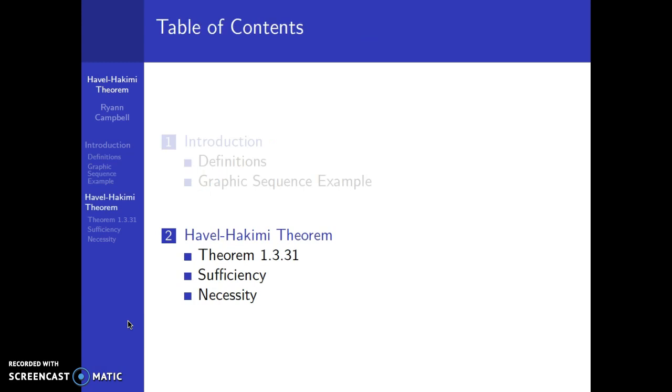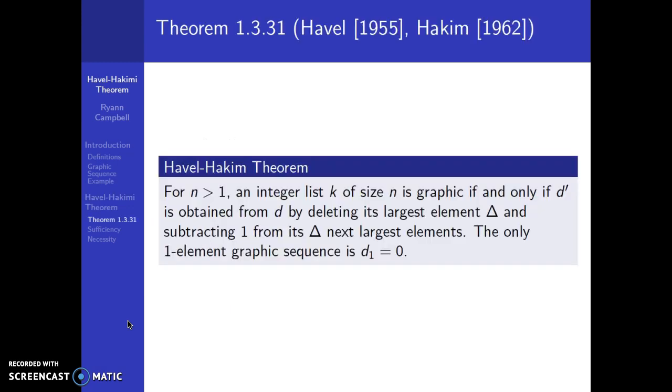Now that we have gone through the definitions and a small example, we are going to learn about the Havel-Hakimi theorem and prove it. The Havel-Hakimi theorem states that for n greater than 1, an integer list d of size n is graphic if and only if d' is obtained from d by deleting its largest element Δ and subtracting 1 from its Δ next largest elements. The only one element graphic sequence is d1 equals 0.